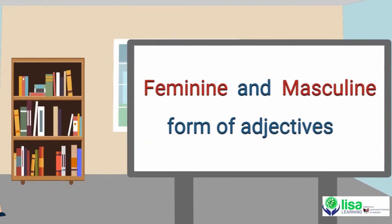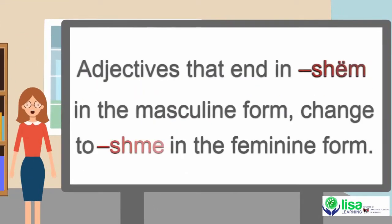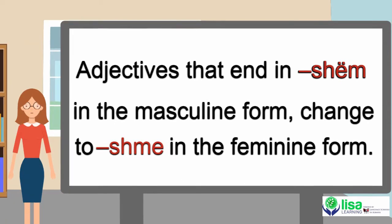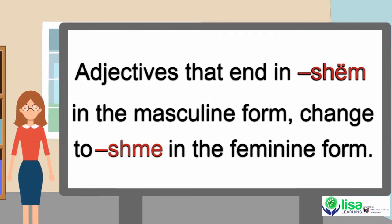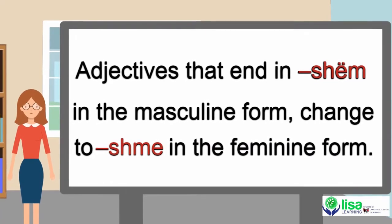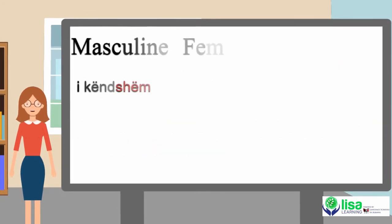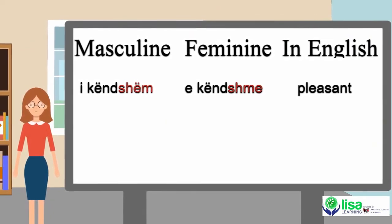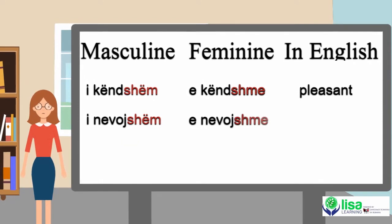Feminine and masculine forms of adjectives: adjectives that end in -ëm in the masculine form change to -ëme in the feminine form. Example: masculine i këndshëm, feminine e këndshme — in English, pleasant.